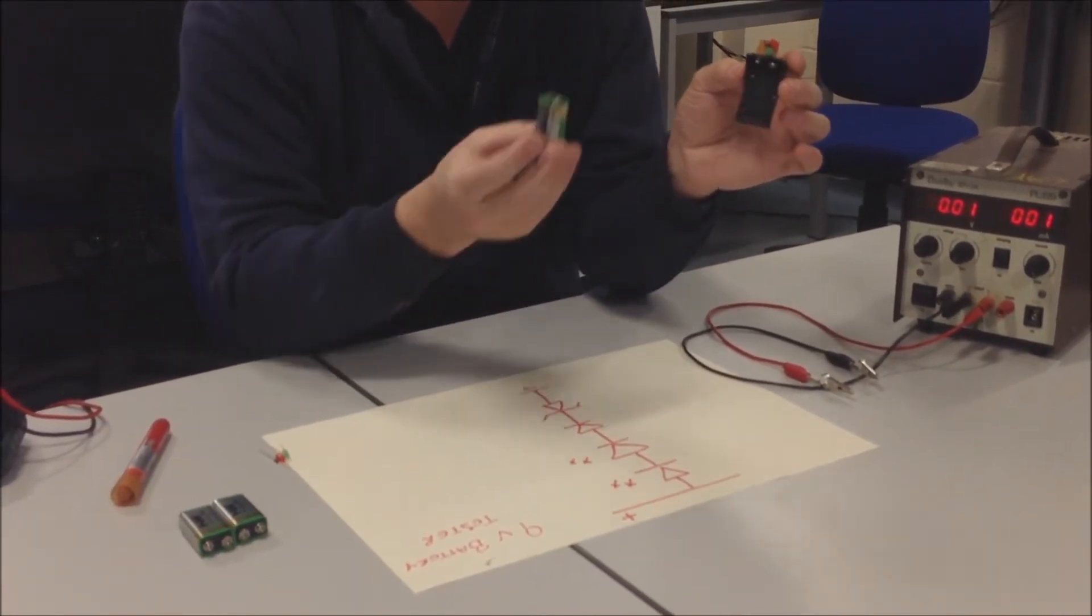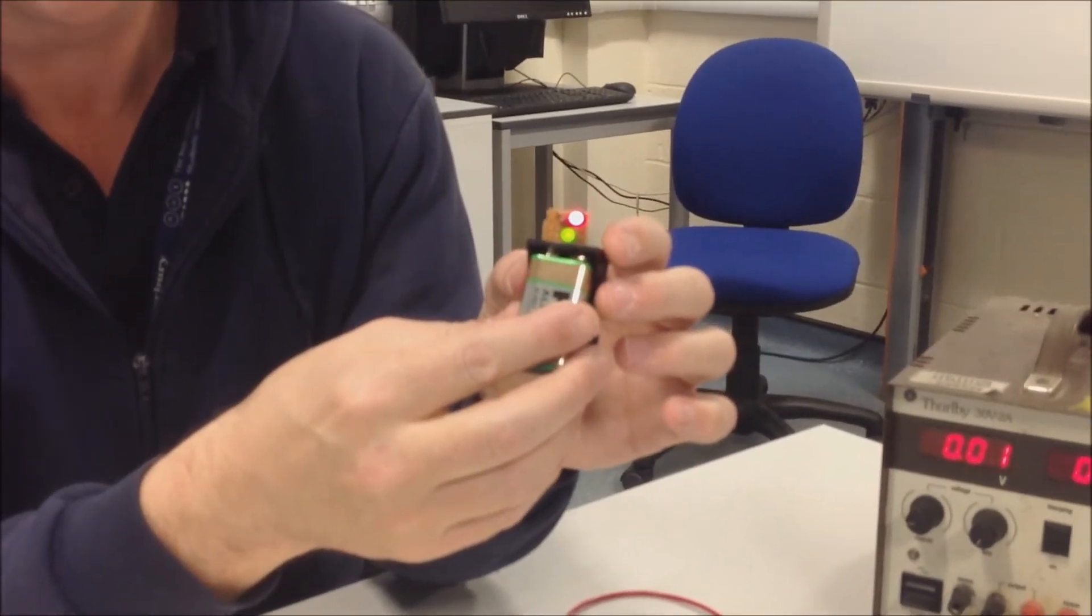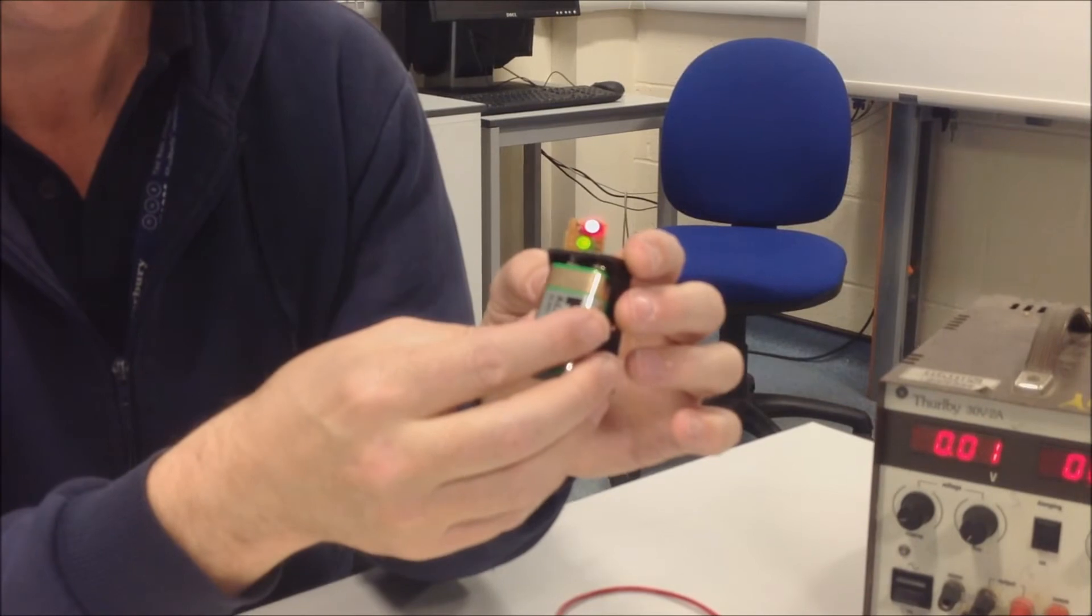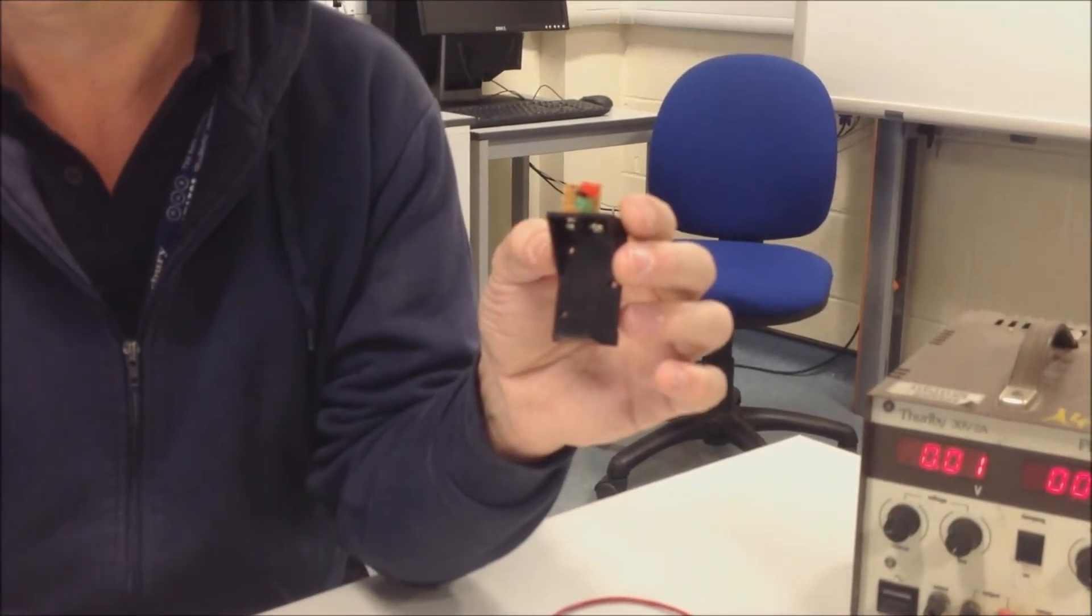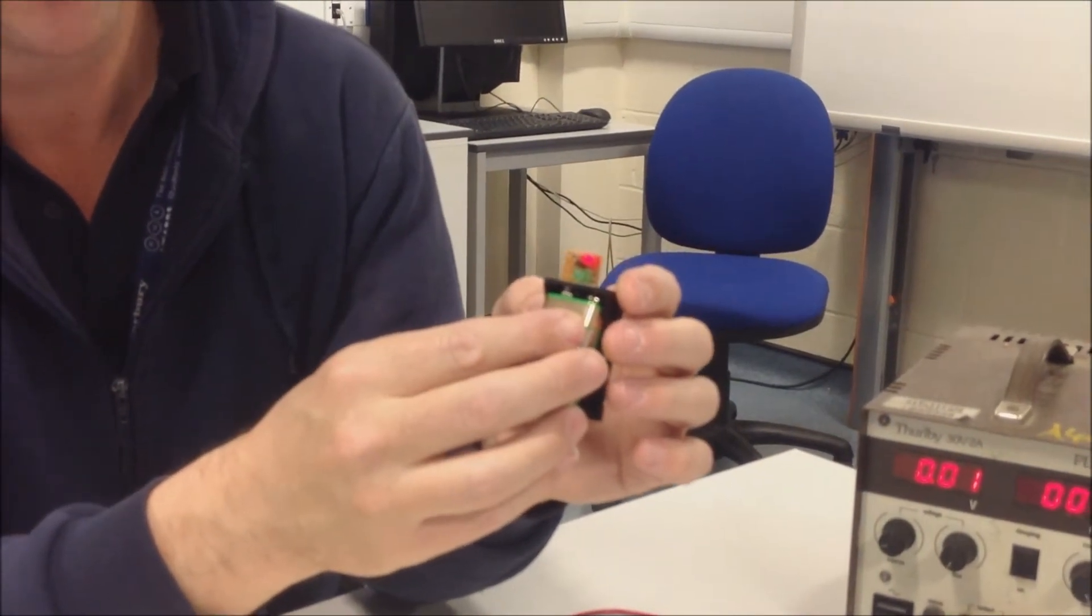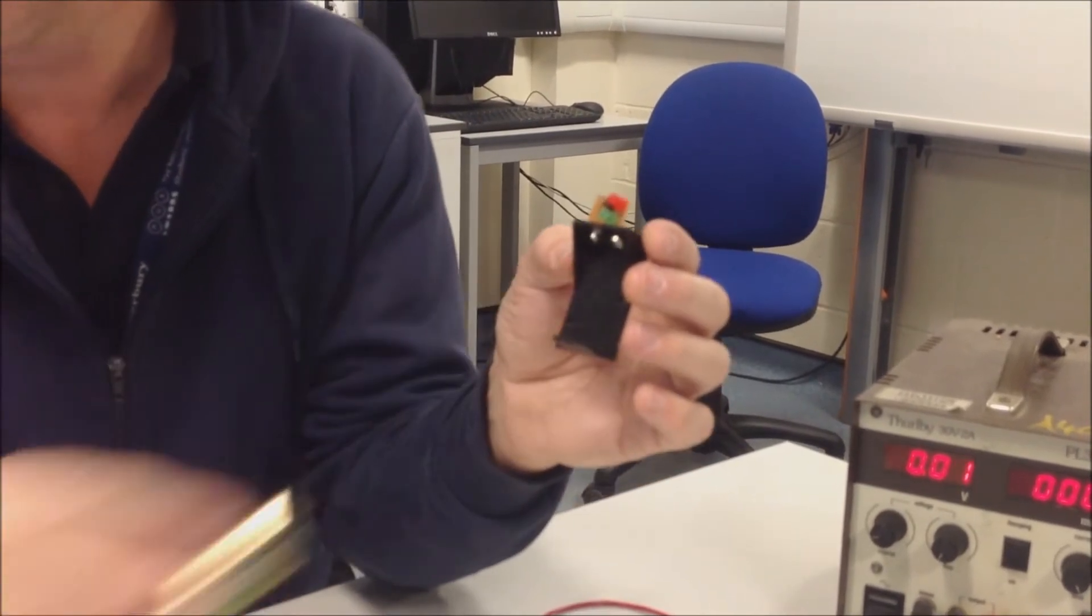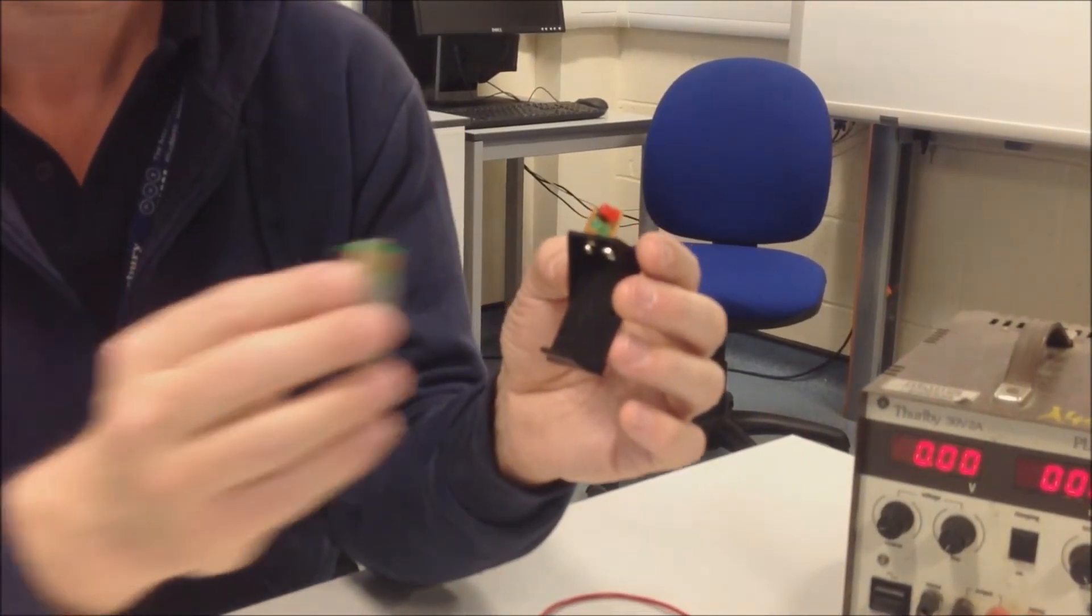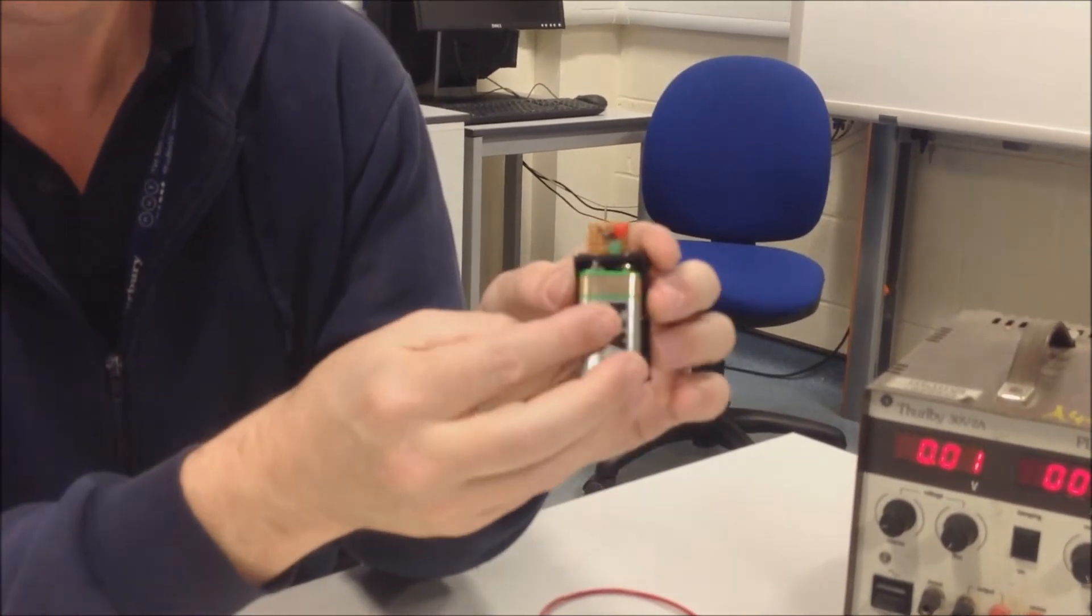So I've got some 9 volt batteries here. You just clag it on like that. That's a fully healthy battery, so we've got both lights working there, both LEDs. This next one here just about got a red LED working. So that would be at about 8.5 volts. I'll show you how that works later. And this one is completely flat.